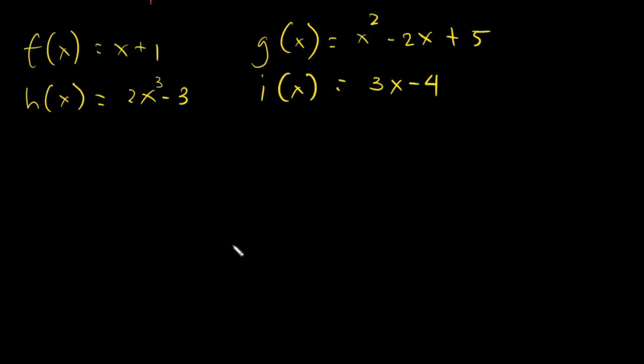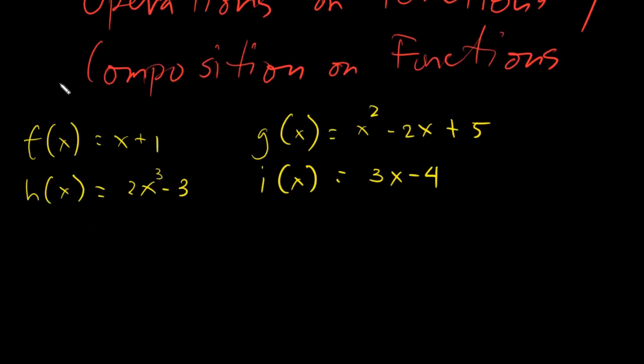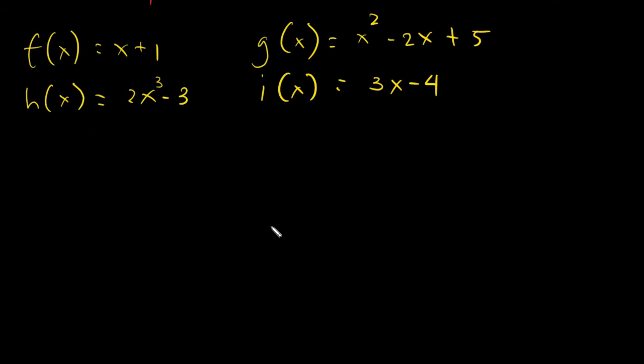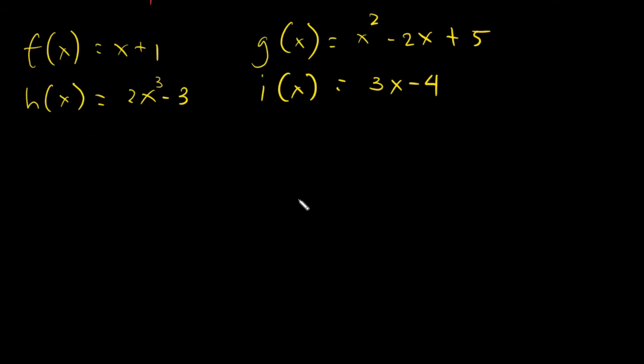We will be using the same given, but the only thing we must remember when it comes to composition on functions is that I call this nested function, meaning I will plant my function on another function. And it's written like this: f circle g of x, or you can simply write this down as f of g of x.